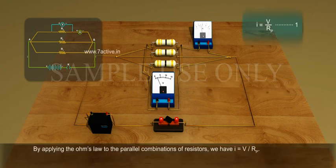By applying Ohm's law to the parallel combination of resistors, we have I equals V by Rp.